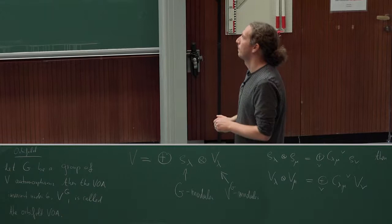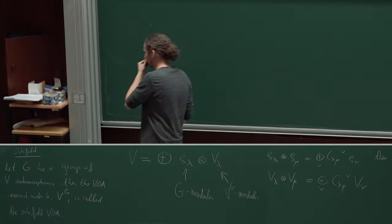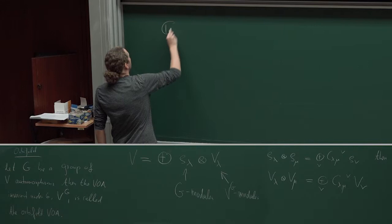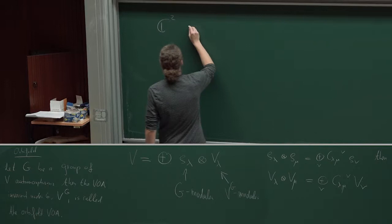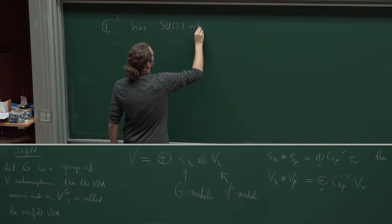Let me do an example. We take now a vector space that carries an action of our favorite Lie group. For example, we know that C² carries an action of SU(2).